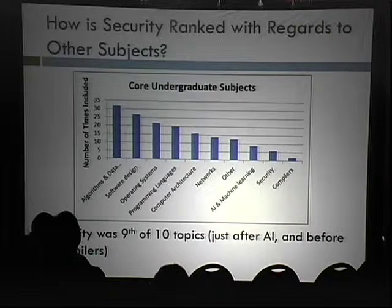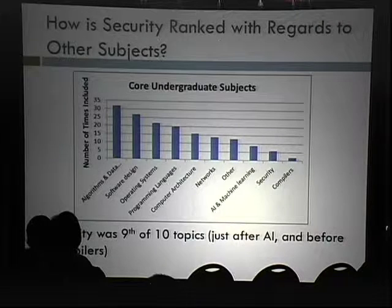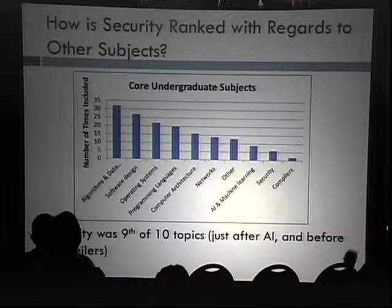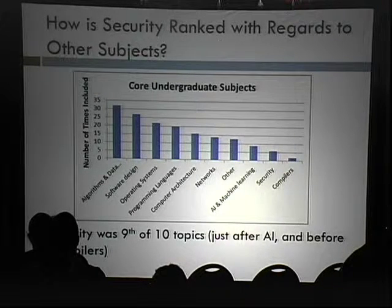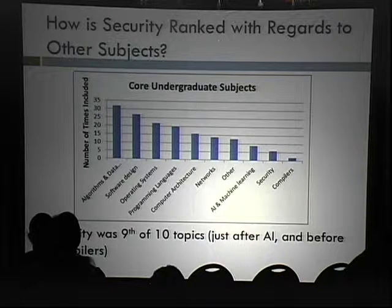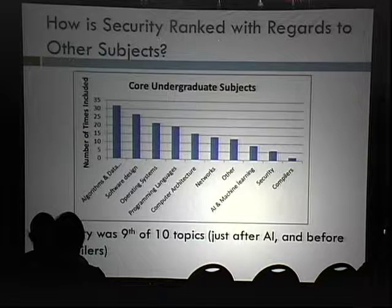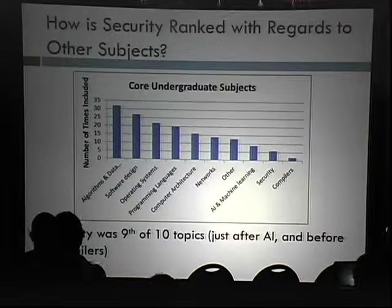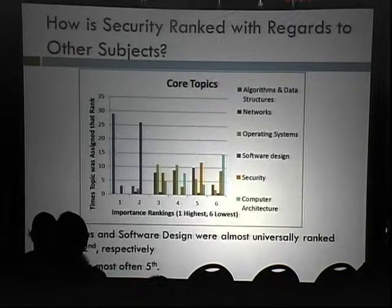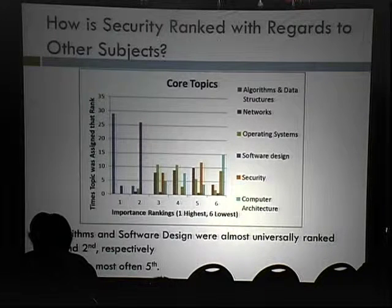The first question I wanted to answer was how security is ranked relative to other subjects. I gave professors ten different undergraduate core subjects and asked them to pick the five they viewed as most important. Algorithms and data structures came in first — not surprising — then software design, operating systems, programming languages. Security came in at number nine, with only compilers after it. It was a terrible showing.